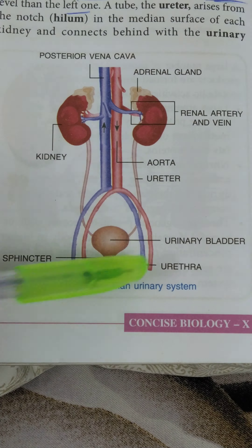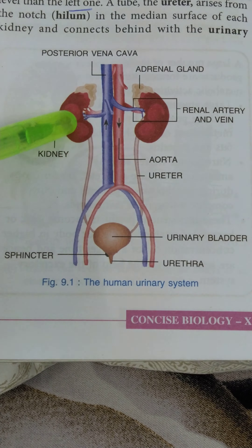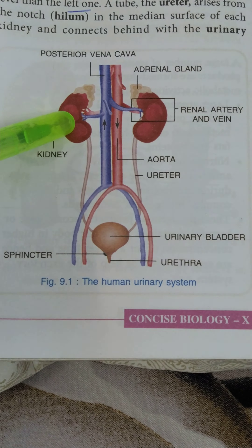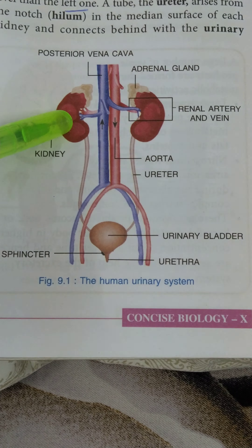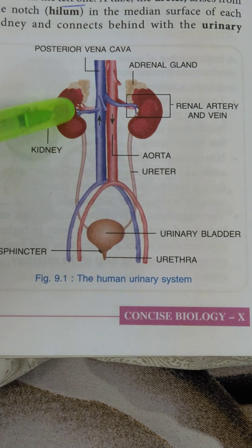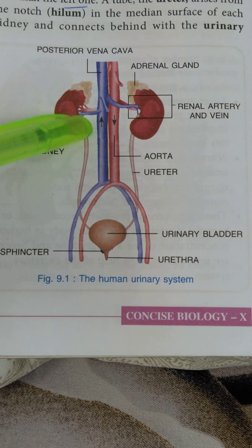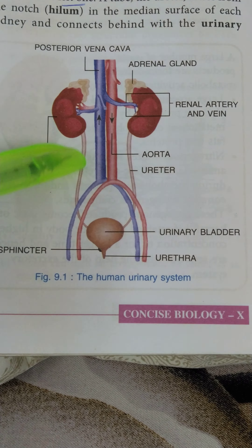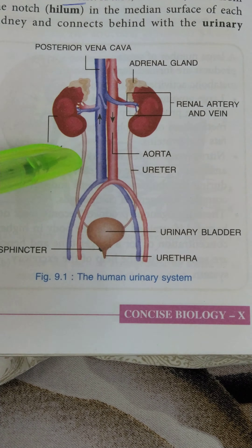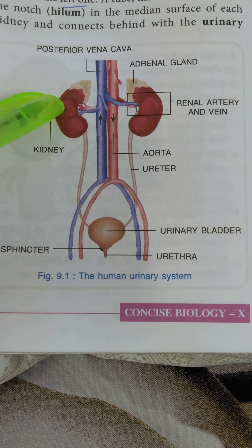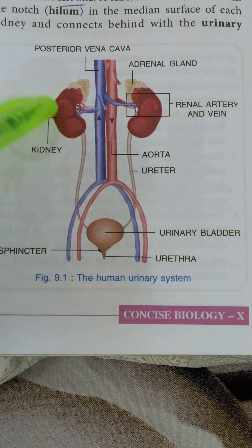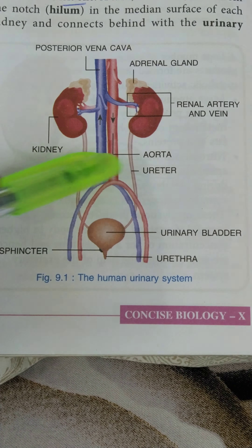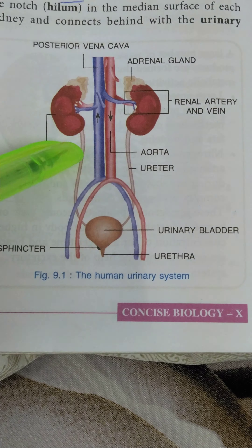The ureters end into a sac-like structure called the urinary bladder, and it opens out of our body with the help of a single tube called the urethra. We have two kidneys — left and right — and the right kidney is slightly lower than the left one. From the center depression, the notch of the kidneys, this tube called ureter comes out. So kidneys are responsible for forming urine.